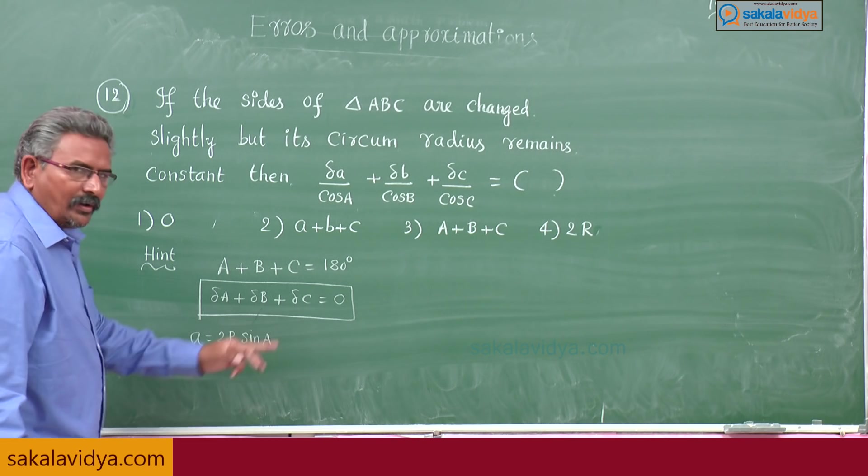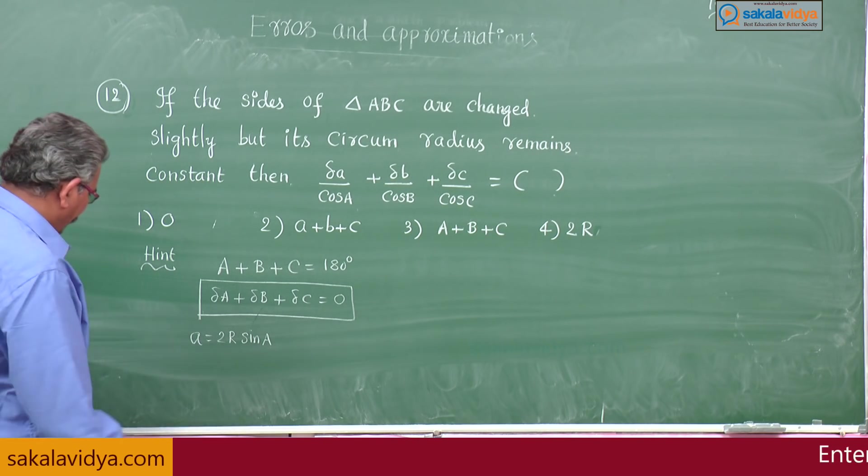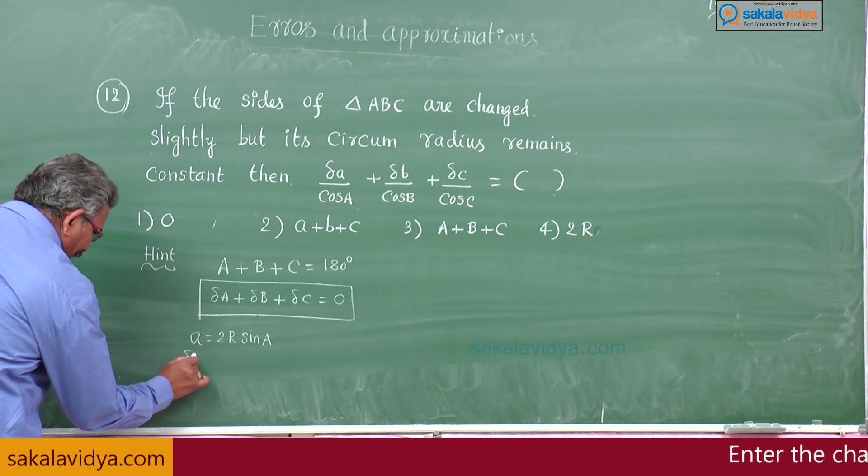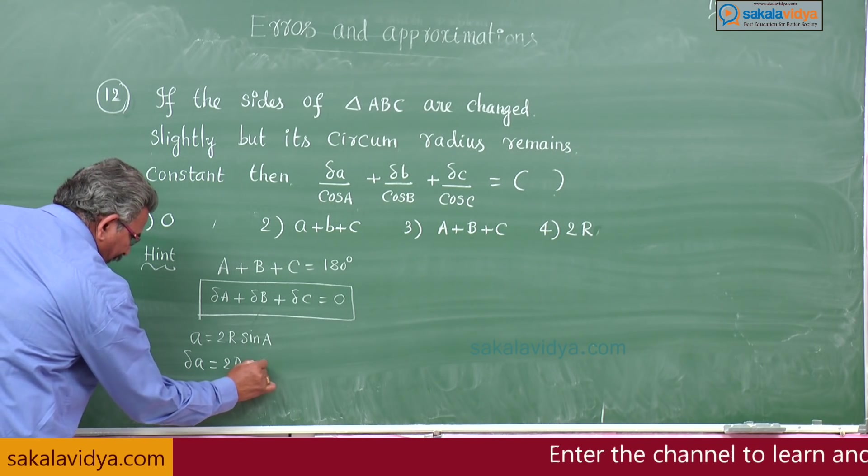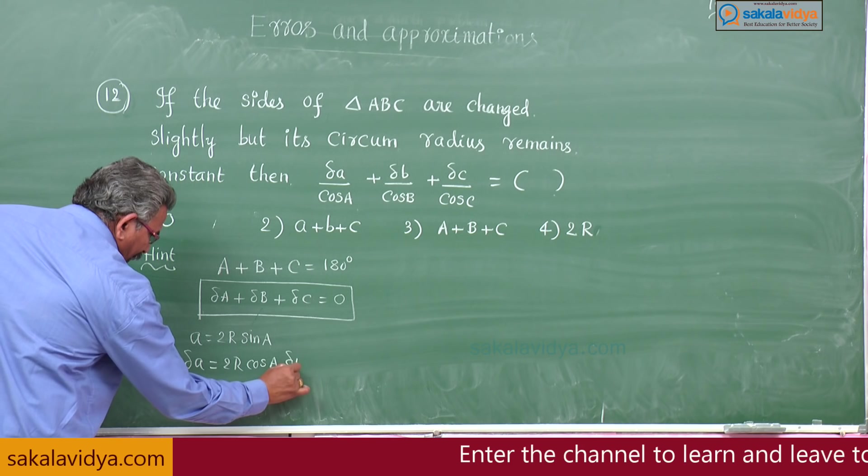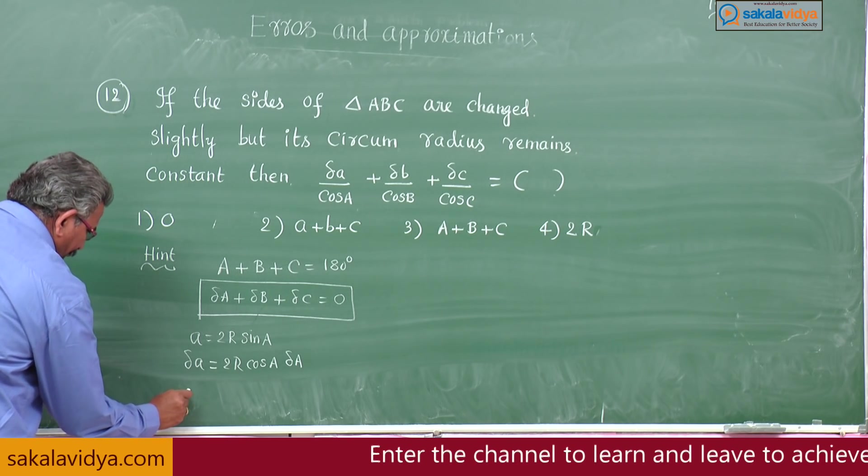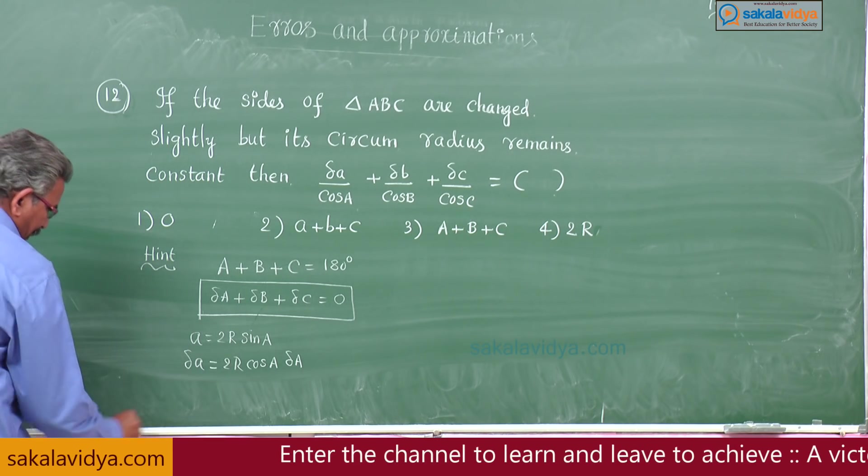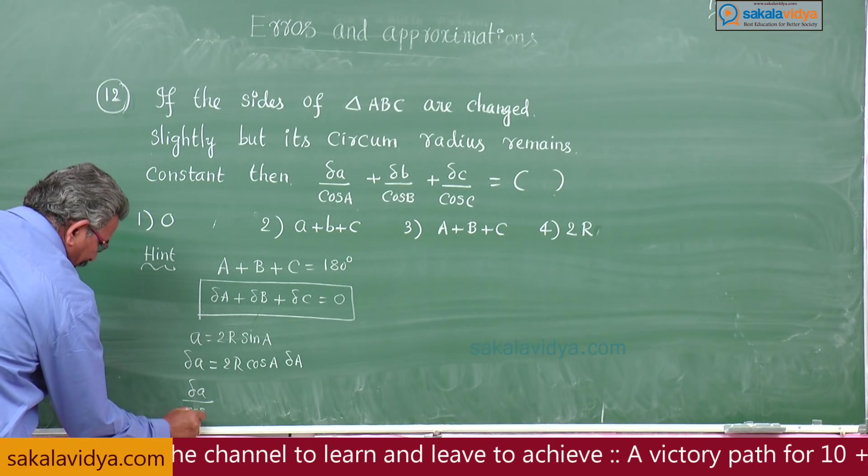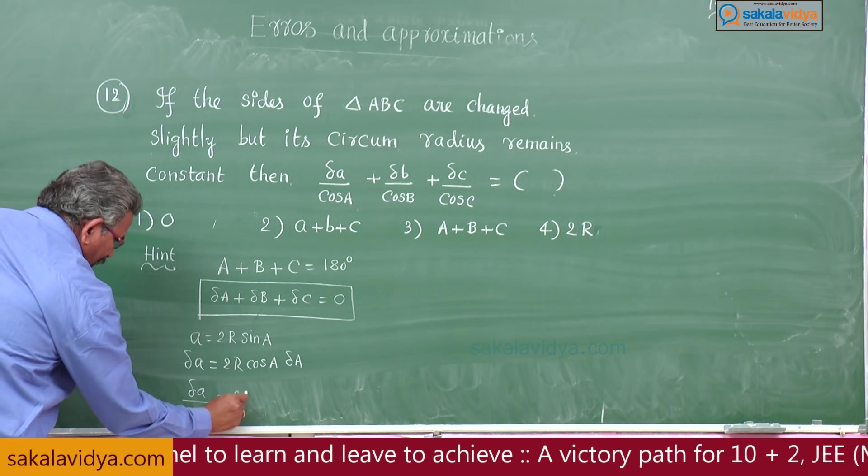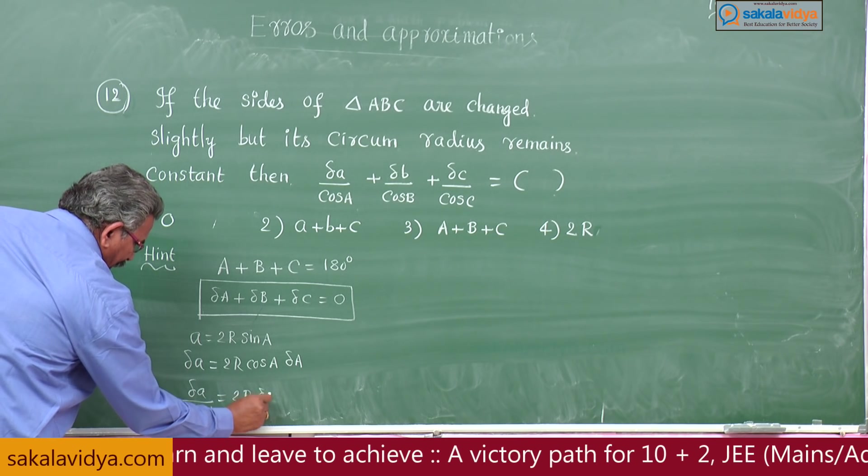We know sine rule: small a is equal to 2R sin A. Now find differentiation with respect to A. You can write delta A equals to 2R cos A into delta capital A.